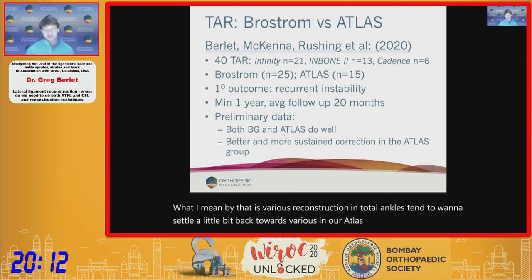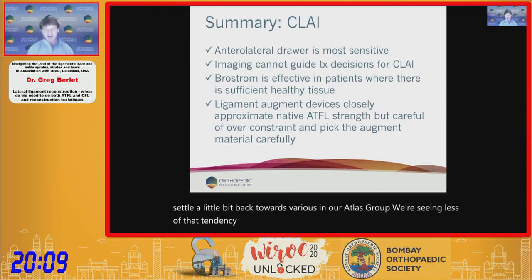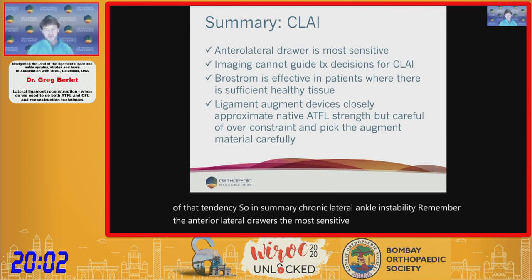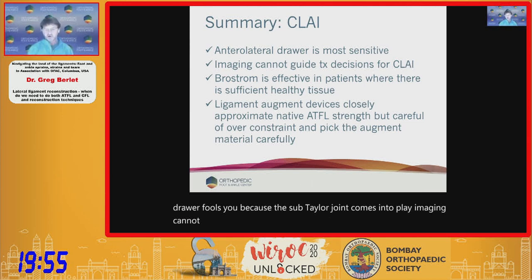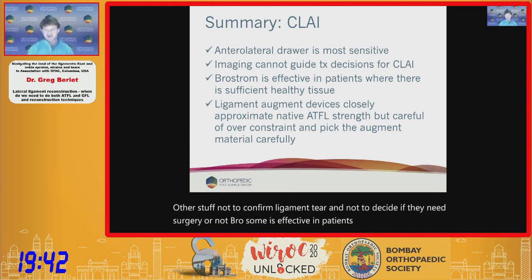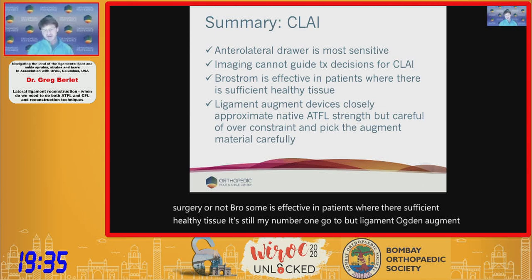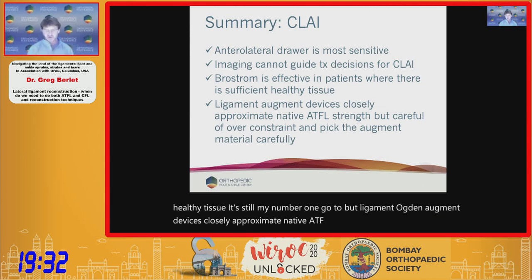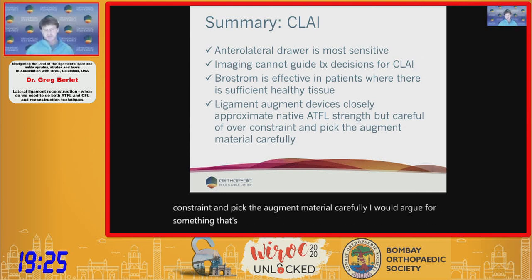In summary: the anterolateral drawer is most sensitive for ankle instability — the anterior drawer is confounded by the subtalar joint. Imaging cannot guide treatment decisions for chronic lateral ankle instability; MRI is for identifying associated pathology, not confirming ligament tear or deciding on surgery. Brostrum remains effective where healthy tissue exists and is still my first choice. Ligament augment devices closely approximate native ATFL strength, but avoid over-constraint and choose a material with some stretchiness.